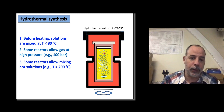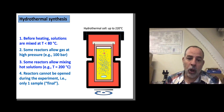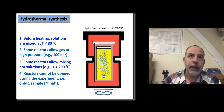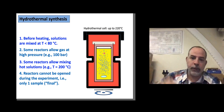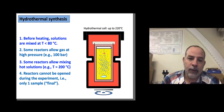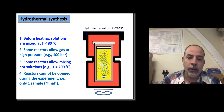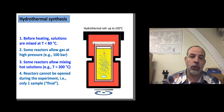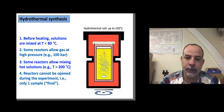These reactors cannot be opened during the experiment to take samples — you only get one sample, which is the final sample. If operating at 200 degrees C, it's not easy to open them because you have to cool down, take the sample, then warm up again, and the experiment could give unexpected results. So if you want to take different samples as a function of time, you have to prepare several reactors and open each one at different elapsed times.